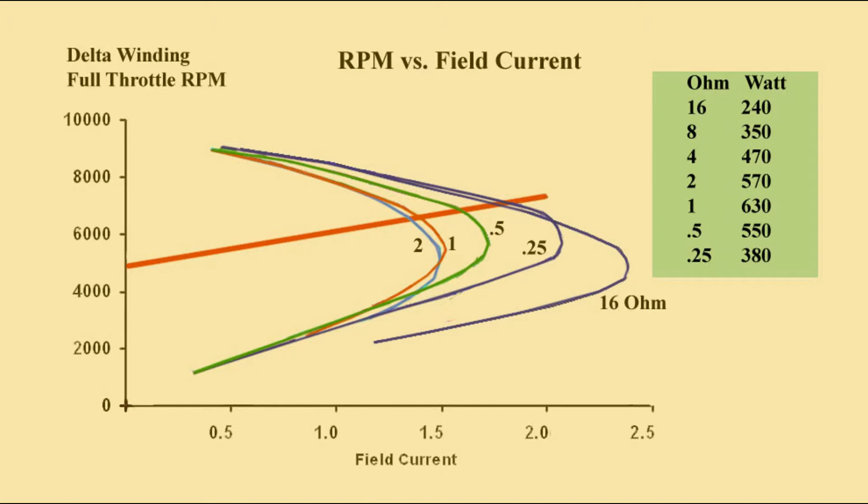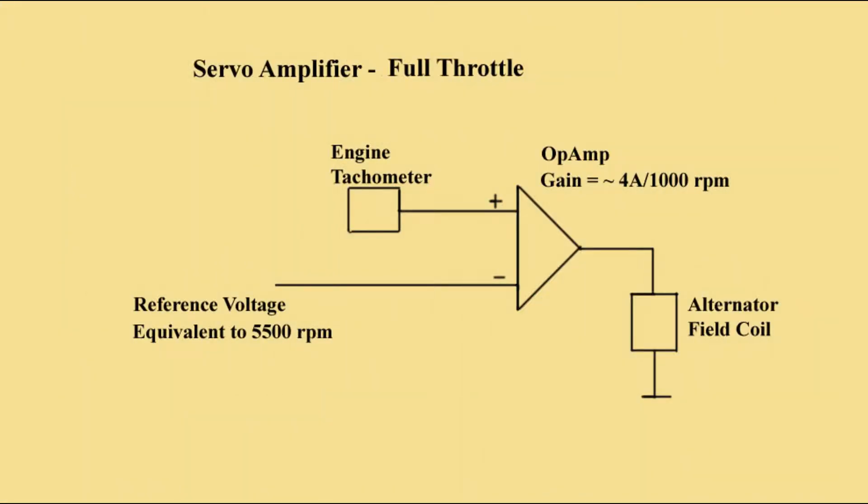Now how is the controller implemented? This circuit achieves the desired result. An amplifier compares the actual RPM with a reference and drives field current proportional to the difference.